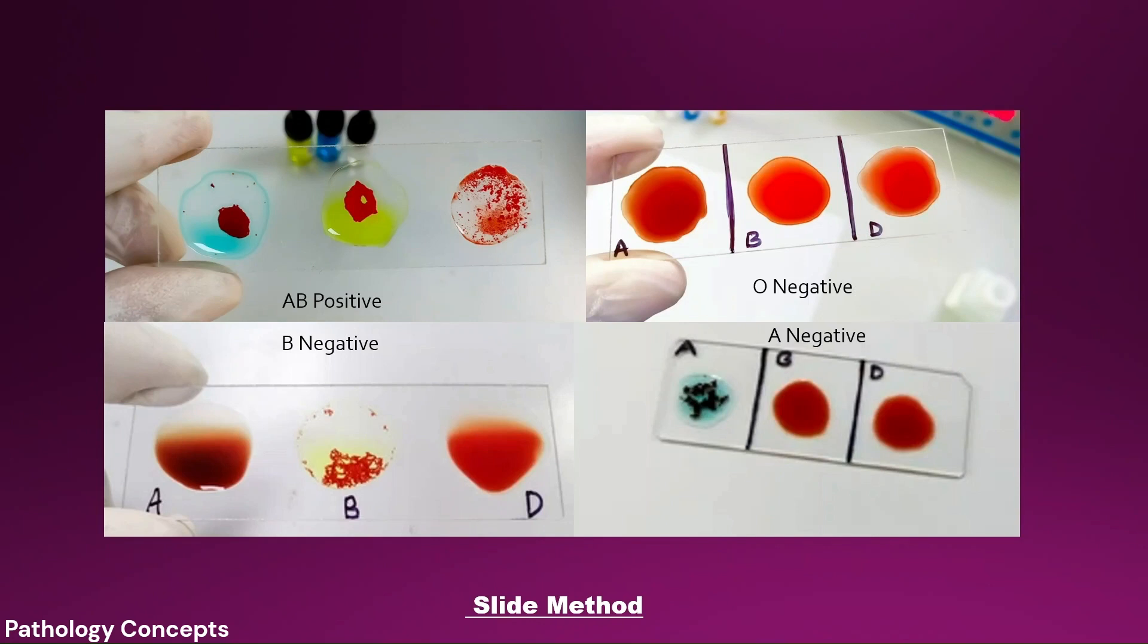The third picture, left hand side lower corner, shows B negative blood group with agglutination with anti-B serum only. And the fourth, right hand side lower corner, shows A negative blood group, showing agglutination with anti-A serum.